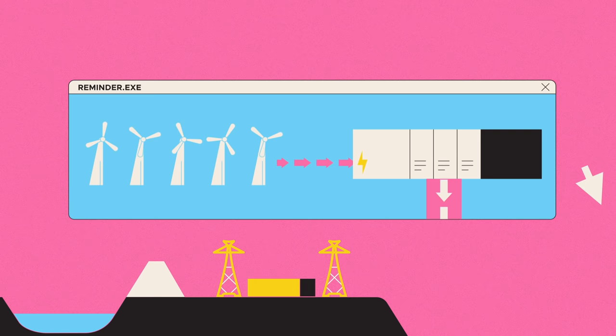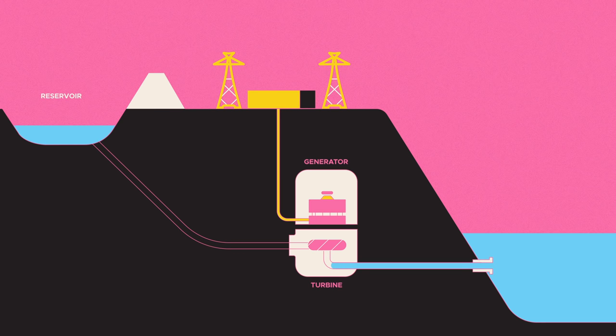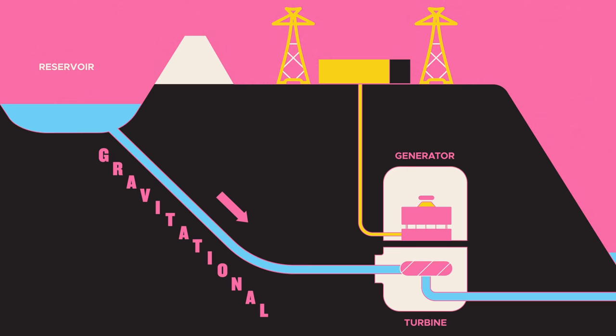Remember how at the Hornsdale wind farm, excess energy was stored in batteries? Well, in pumped hydro, that excess energy is used to pump water uphill, where it's stored in a reservoir. When more power is needed, the water is allowed to flow downhill. Hence the word gravitational, powering turbines and generating electricity.